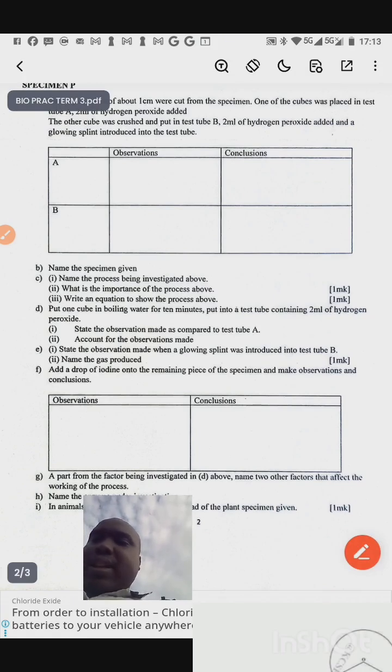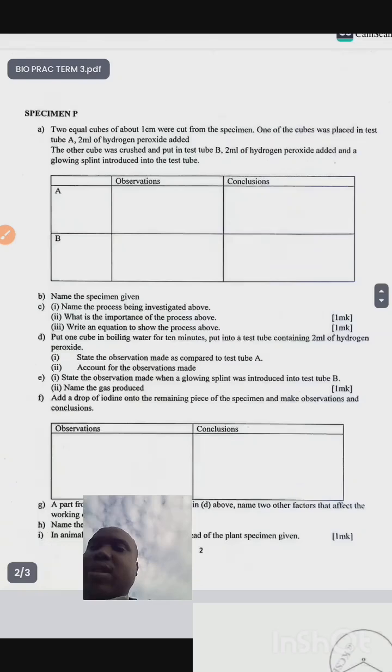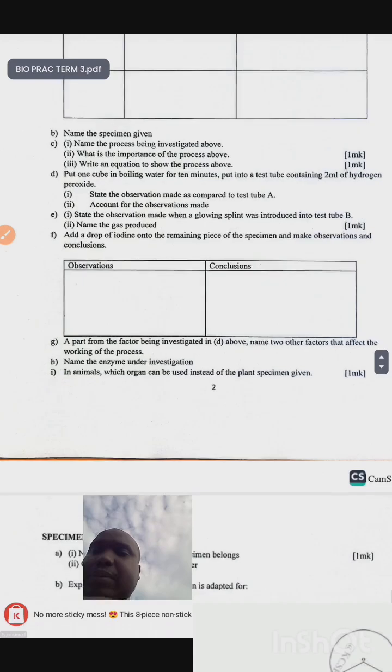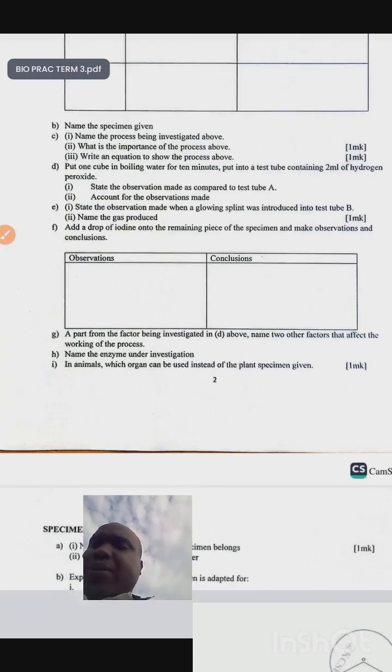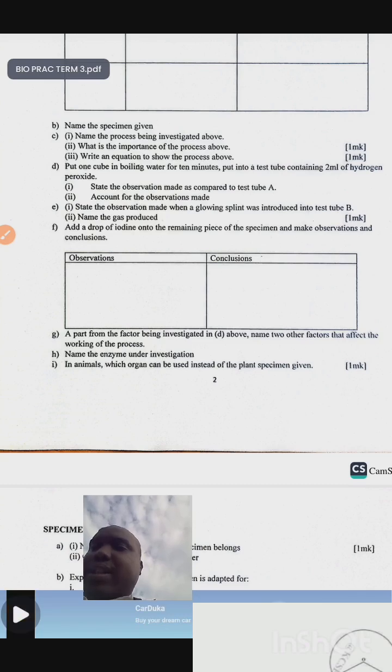State the observation made when a glowing splint was introduced to test tube B. Name the gas produced in test tube A. Add a drop of iodine into the remaining piece of the specimen and make observations and conclusion. Note there is no writing in the procedure, you just make the concrete observations and take conclusion. Apart from the factor being investigated in the above, name two other factors that affect the working of the process. Name the enzyme under investigation. In which, in animals, which organ can be used instead of the plant specimen given?